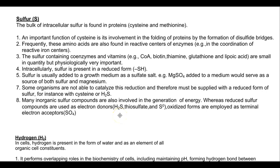Some microorganisms are incapable of reducing oxidized sulfate into reduced form, so for these organisms sulfur must be supplied in reduced form as cysteine or hydrogen sulfide. Inorganic sulfur compounds are involved in energy generation — reduced sulfur compounds such as hydrogen sulfide, thiosulfide, and elemental sulfur serve as electron donors in sulfur-oxidizing bacteria. At the same time, the oxidized form — sulfate — serves as a terminal electron acceptor in sulfur-reducing bacteria, which convert sulfate into hydrogen sulfide.